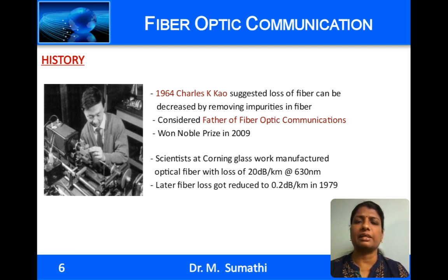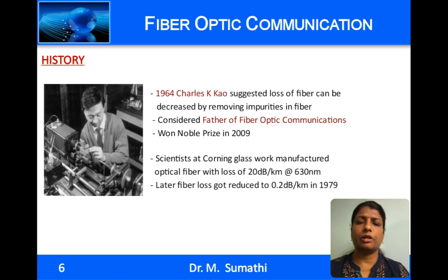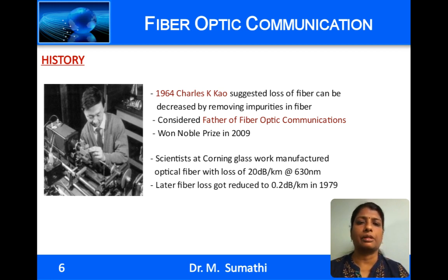Nobody considered fiber optics as a serious contender for telecommunication purposes, not until 1964 when Charles Kao suggested that the loss in a fiber was due to the impurities present in it, and that if the impurities were removed, the loss could be brought down drastically. A few years later, three scientists working at Corning Glass Works manufactured a fiber with a loss of around 20 dB per kilometer — a huge advancement from 1000 dB per kilometer. Charles Kao was awarded the Nobel Prize in 2009 for his proposal, and he is considered the father of fiber optic communication.